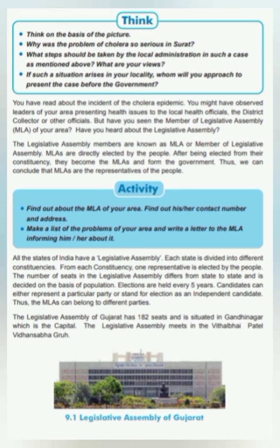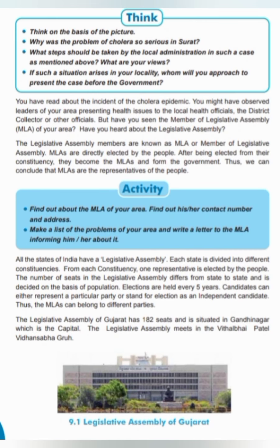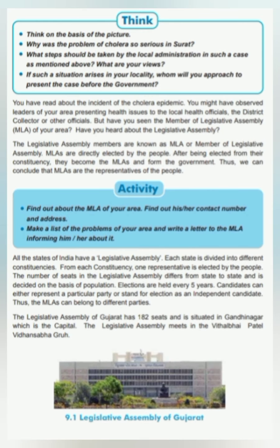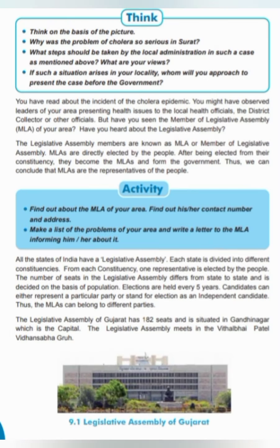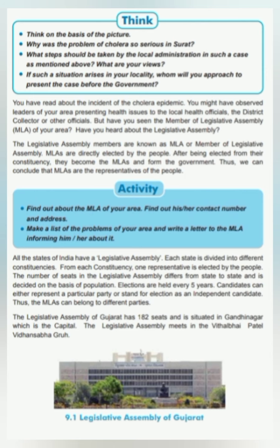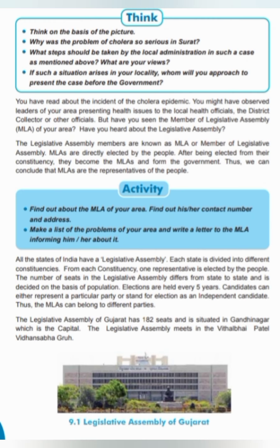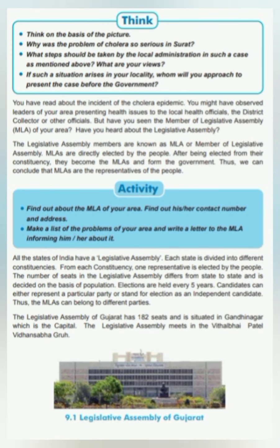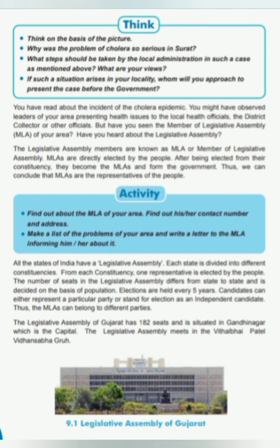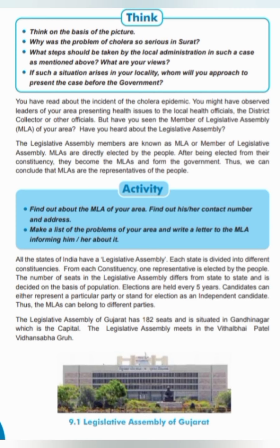The number of seats in the Legislative Assembly differs from state to state and is decided on the basis of population. Elections are held every five years. Candidates can either represent a particular party or stand for election as an independent candidate. Thus, the MLAs can belong to different parties. The Legislative Assembly of Gujarat has 182 seats and is situated in Gandhinagar, which is the capital. The Legislative Assembly meets in the Vithalbhai Patel Vidhan Sabha building.